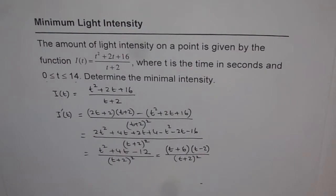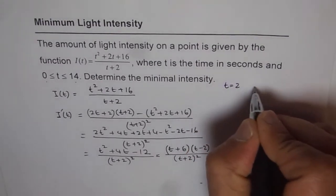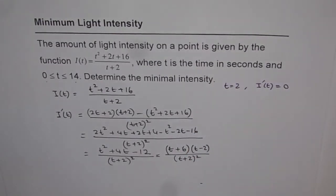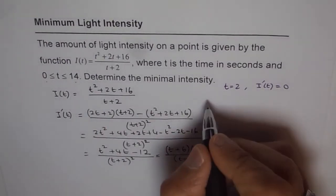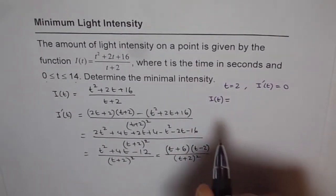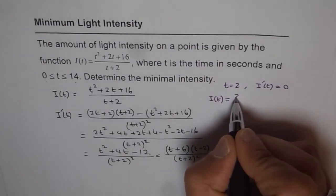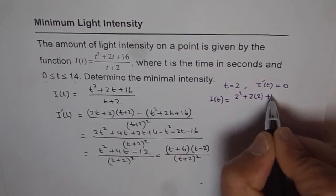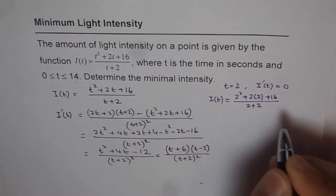So, from here we get a critical number. So we say t equals to 2 is for I'(t) equals to 0, that is the valid number. So, we will find the intensity of light at t equals to 2, that means I(2). What is that equals to? Substitute 2 here and then find your answer. So, we get 2² + 2 times 2 + 16 over 2 + 2.